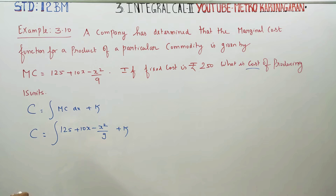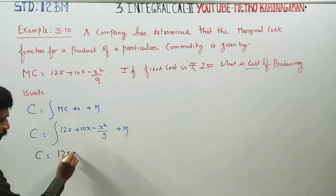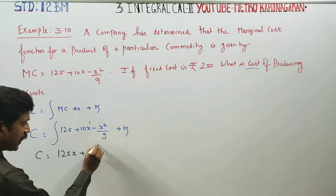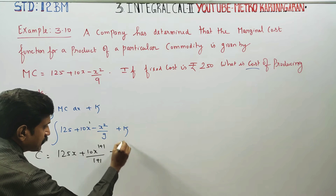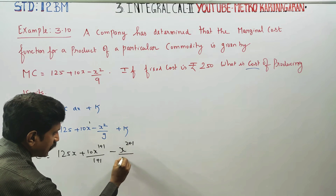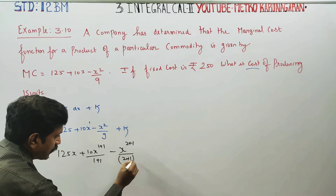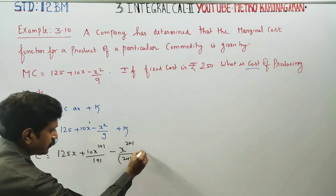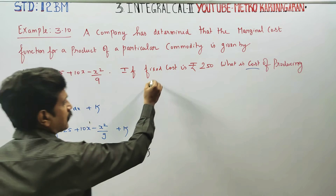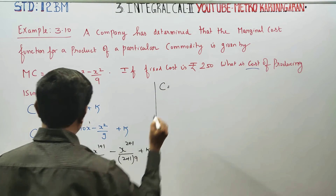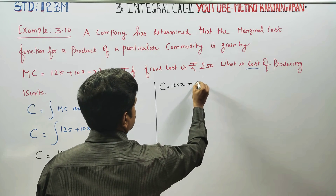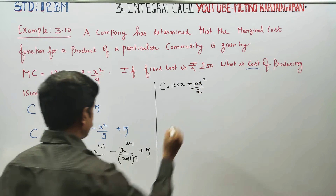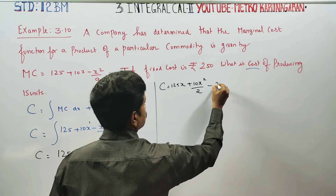Integrating this formula, you will be getting C is equal to 125X plus 10X squared by 2 minus X cubed by 27, plus K.